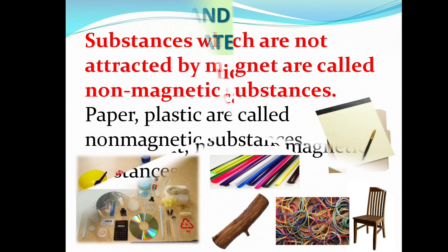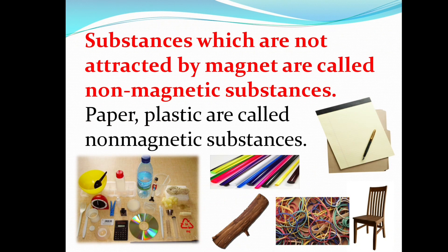What are non-magnetic materials? Substances which are not attracted by a magnet are called non-magnetic substances. Examples of non-magnetic substances include paper, plastic, wood, and rubber.